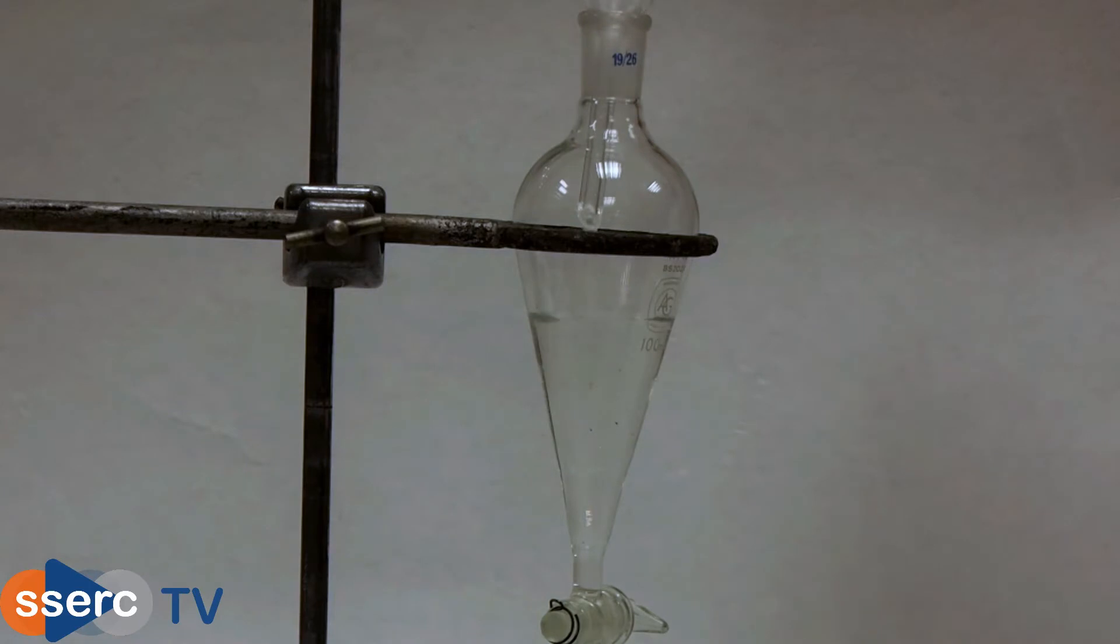Now add 20 cubic centimeters of ethyl ethanoate, ethyl acetate. You can see that this forms a separate layer on top of the water.